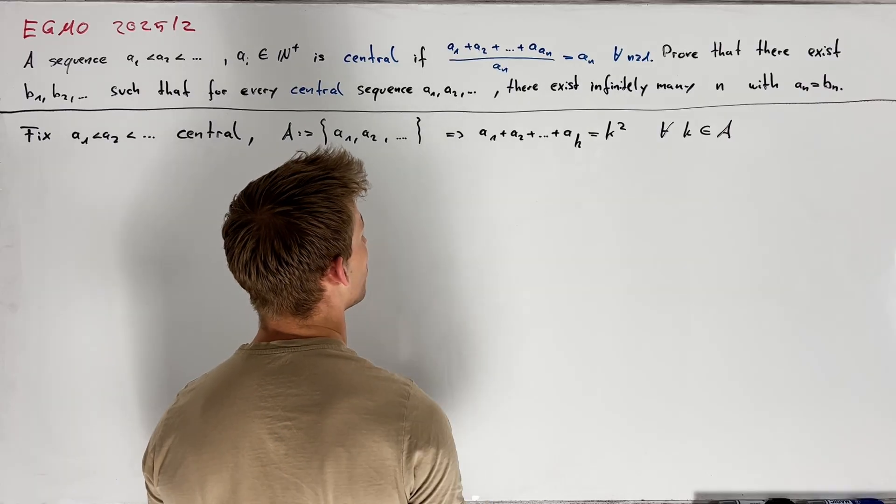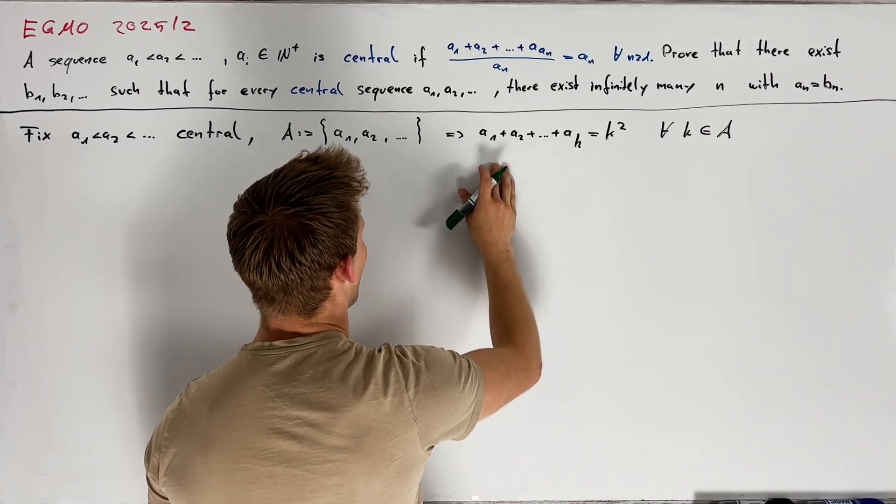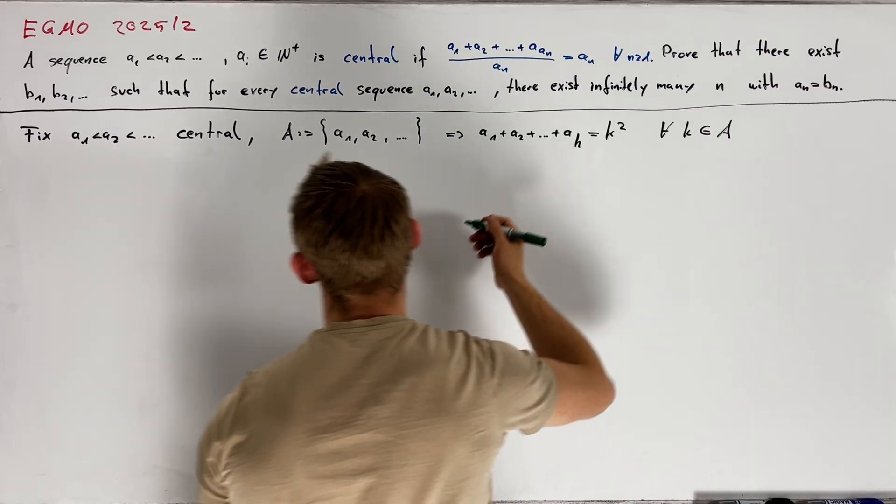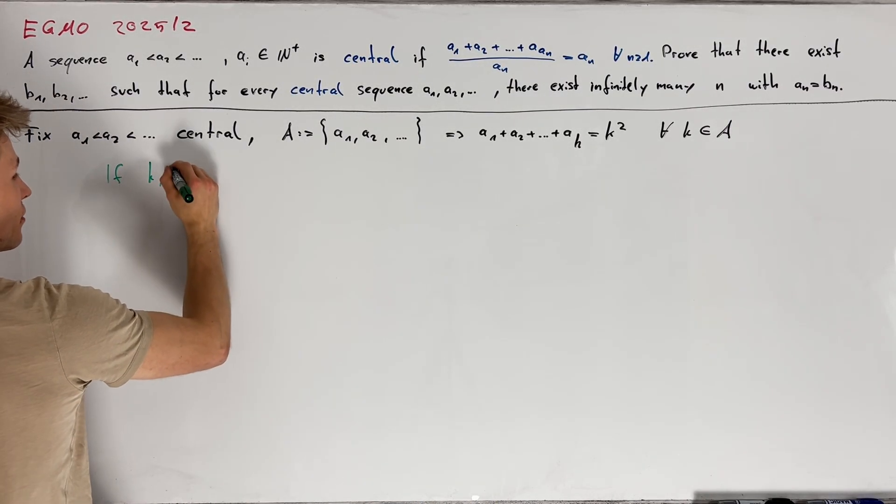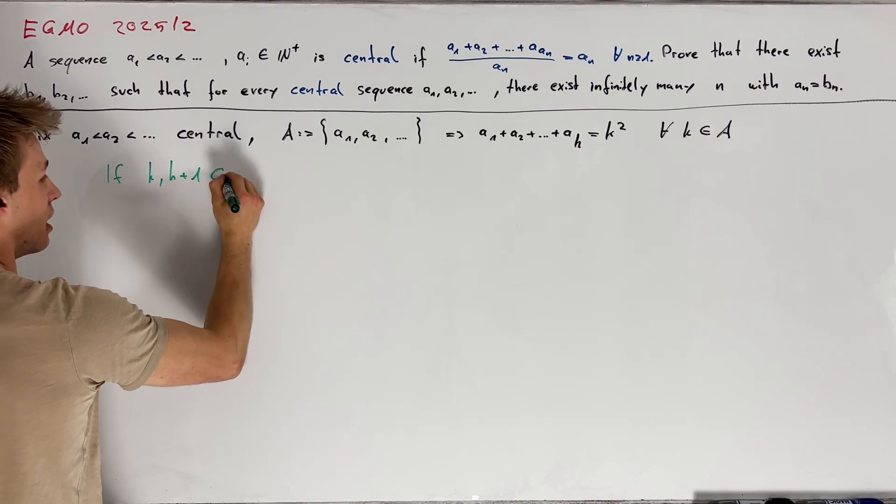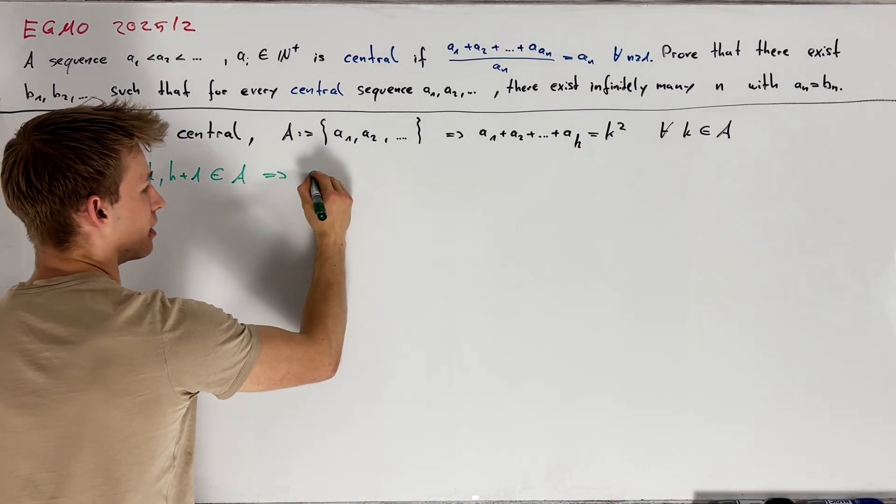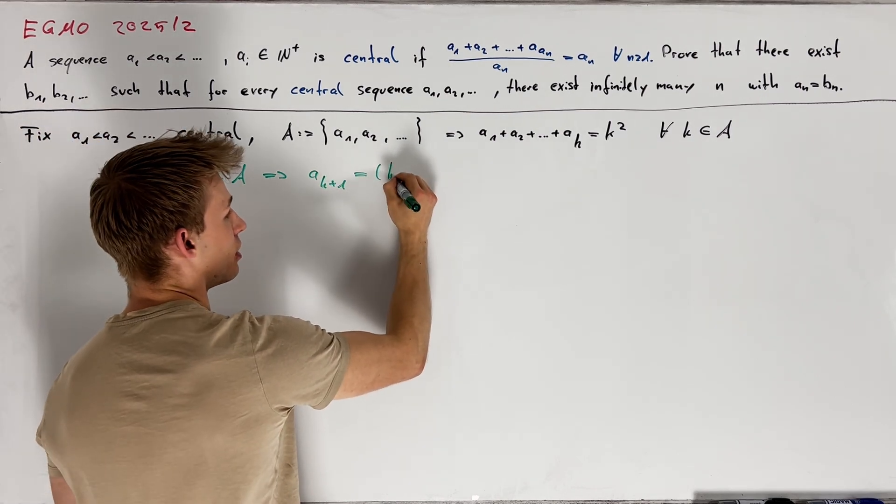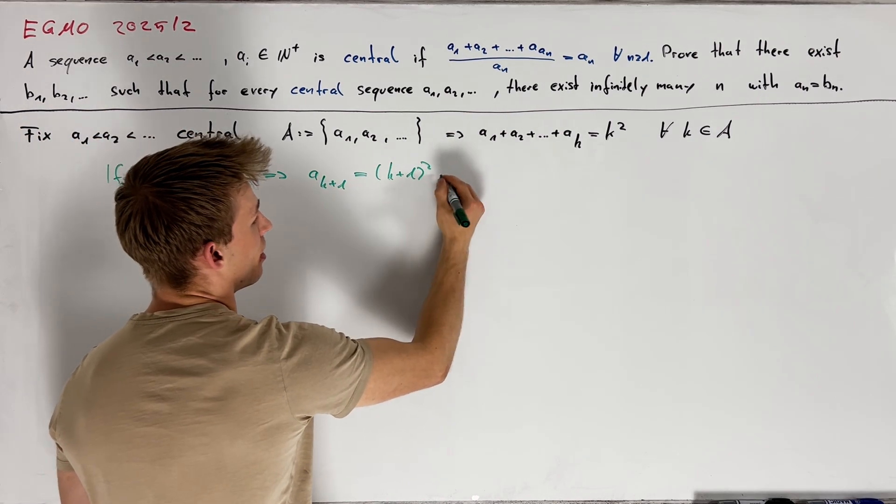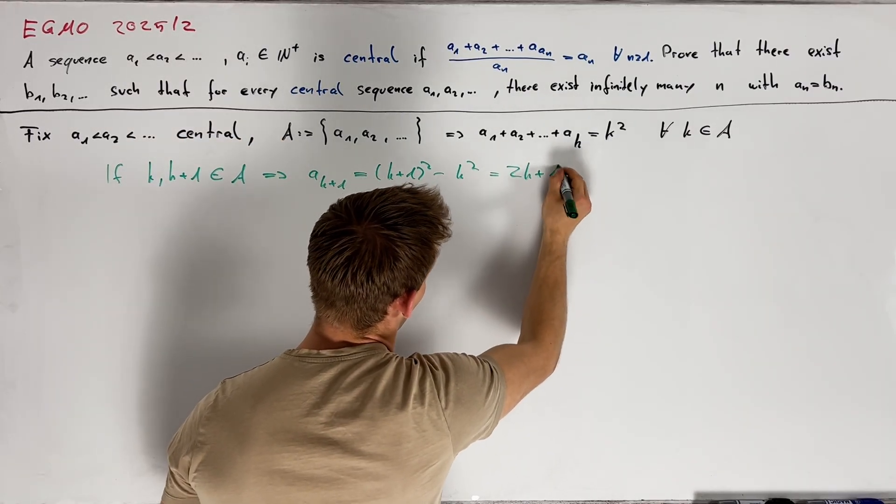The first thing that came to my mind when I saw this equation is that it is fulfilled if all the ai are just the odd positive integers. Indeed if it happens that two consecutive integers k and k plus 1 are both elements of A, we get that a_{k+1} is equal to (k+1) squared minus k squared which is equal to 2k plus 1.